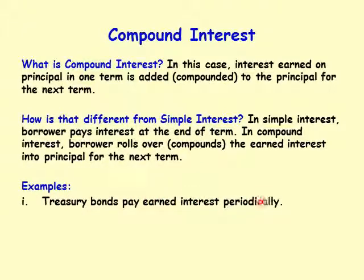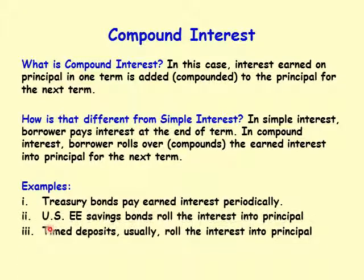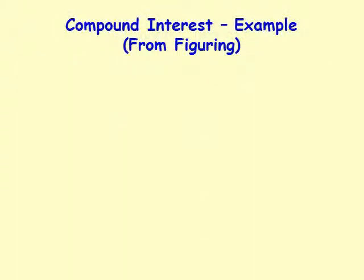For example, a Treasury bond pays interest periodically, so that is a simple interest situation — it does not roll the interest into the principal. A Series EE savings bond rolls the interest into the principal, so that is a compound interest case. A time deposit — called a certificate of deposit in the USA or a fixed deposit in India — usually also rolls the interest into the principal.